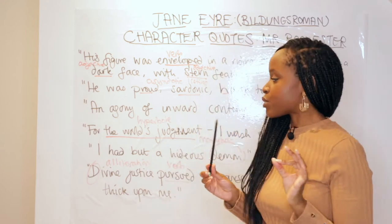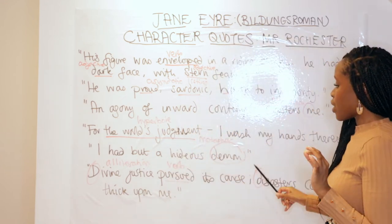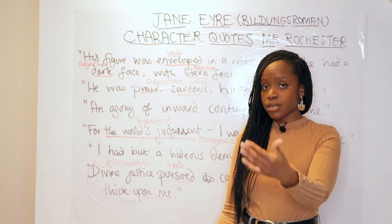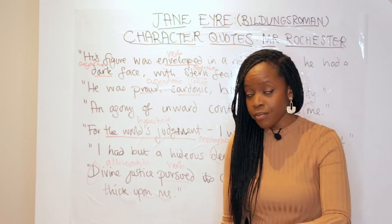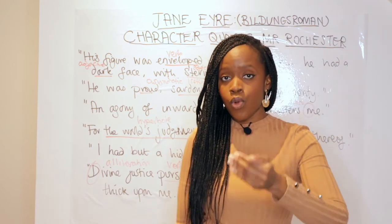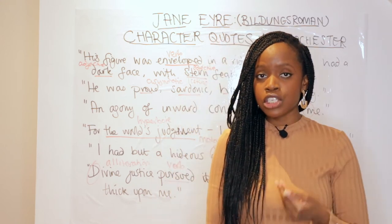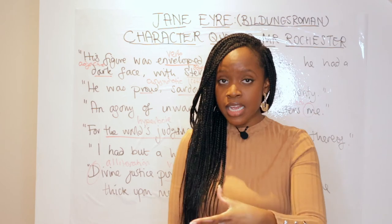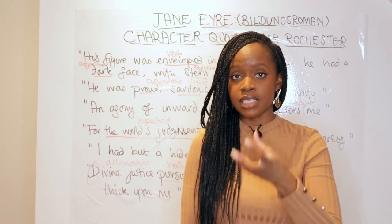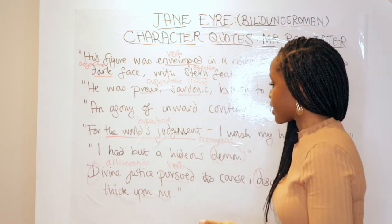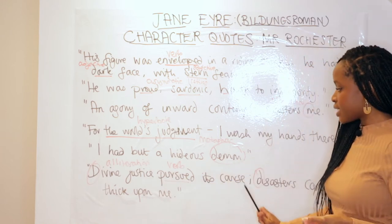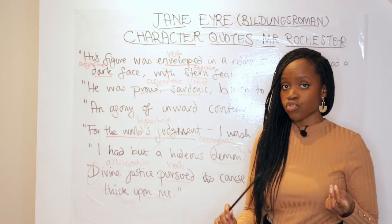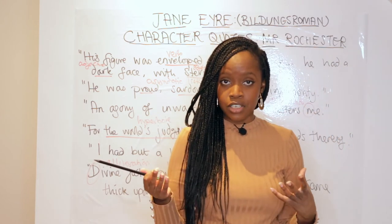The other quotation to remember is when he has to come clean. His marriage to Jane is stopped when someone at the church reveals he is already married. He then takes them to see Bertha, and states 'I had but a hideous demon' that he was married to. The word-level analysis here is the metaphor 'demon' to describe his wife who is mad.